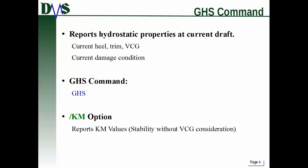There's a fairly important option you should know about: the KM option. Normally GHS reports GMT and GML values, but if you use the KM option, then GHS will report the KM values — which are essentially your stability pivot length without considering the VCG of the vessel.